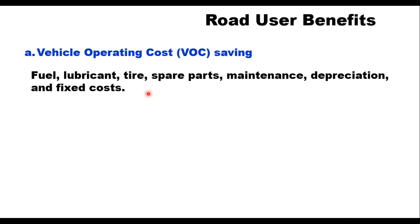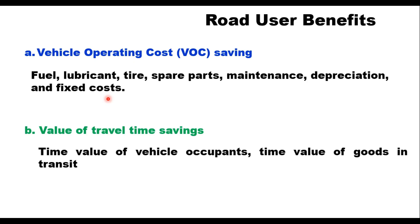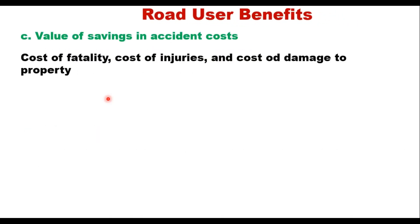The consumption of fuel, lubricant, tire, and spare parts will change with the highway type, but fixed costs remain fixed. The value of travel time saving includes time of vehicle occupants and time value of goods in transit. The value of saving in accident cost is also important — when the facility is improved, the number of accidents is expected to decrease, thereby reducing cost of fatalities, injuries, and property damage.